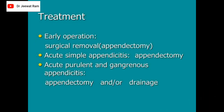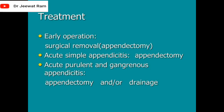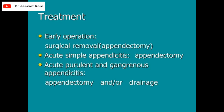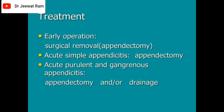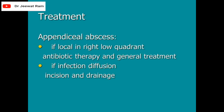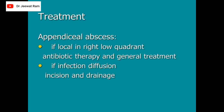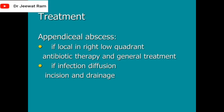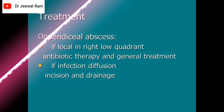Treatment of acute appendicitis: early operation — surgical removal by appendectomy. For acute simple appendicitis: appendectomy. For acute purulent and gangrenous appendicitis: appendectomy and drainage. For appendiceal abscess localized in the right lower quadrant: antibiotic therapy and general treatment. If infection has diffused: incision and drainage.